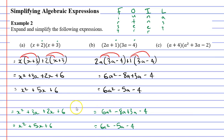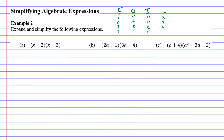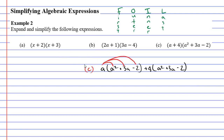To reiterate: you're welcome to use the FOIL method, but you must be careful — it doesn't always work. Moving on to question C, I'll start with a blank slate. We split the a and the 4 into two parts: a times the second set of brackets (a squared plus 3a minus 2), plus 4 times the second set of brackets (a squared plus 3a minus 2). So we multiply a by a squared, by 3a, and by minus 2, then do the same with the 4.